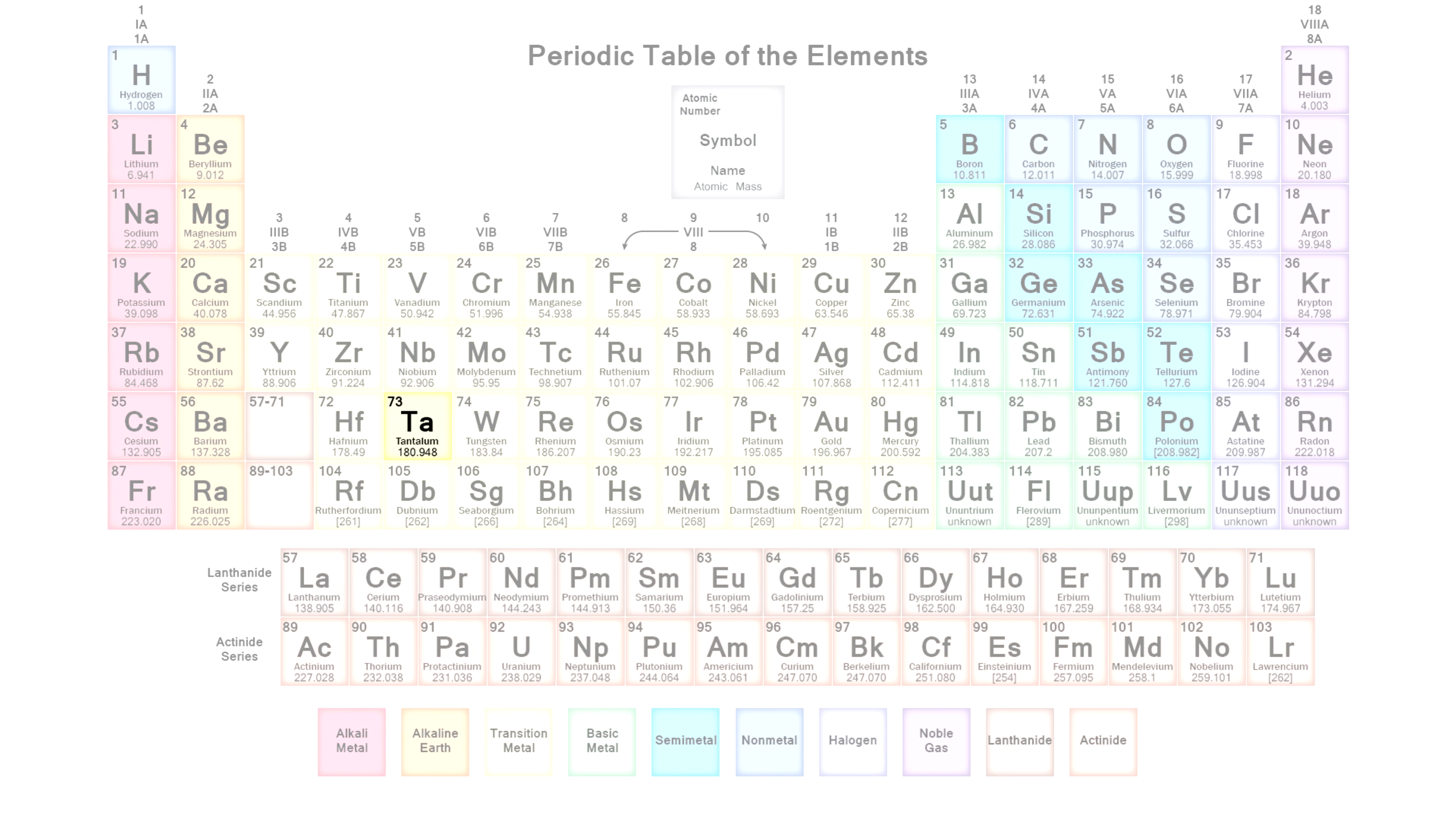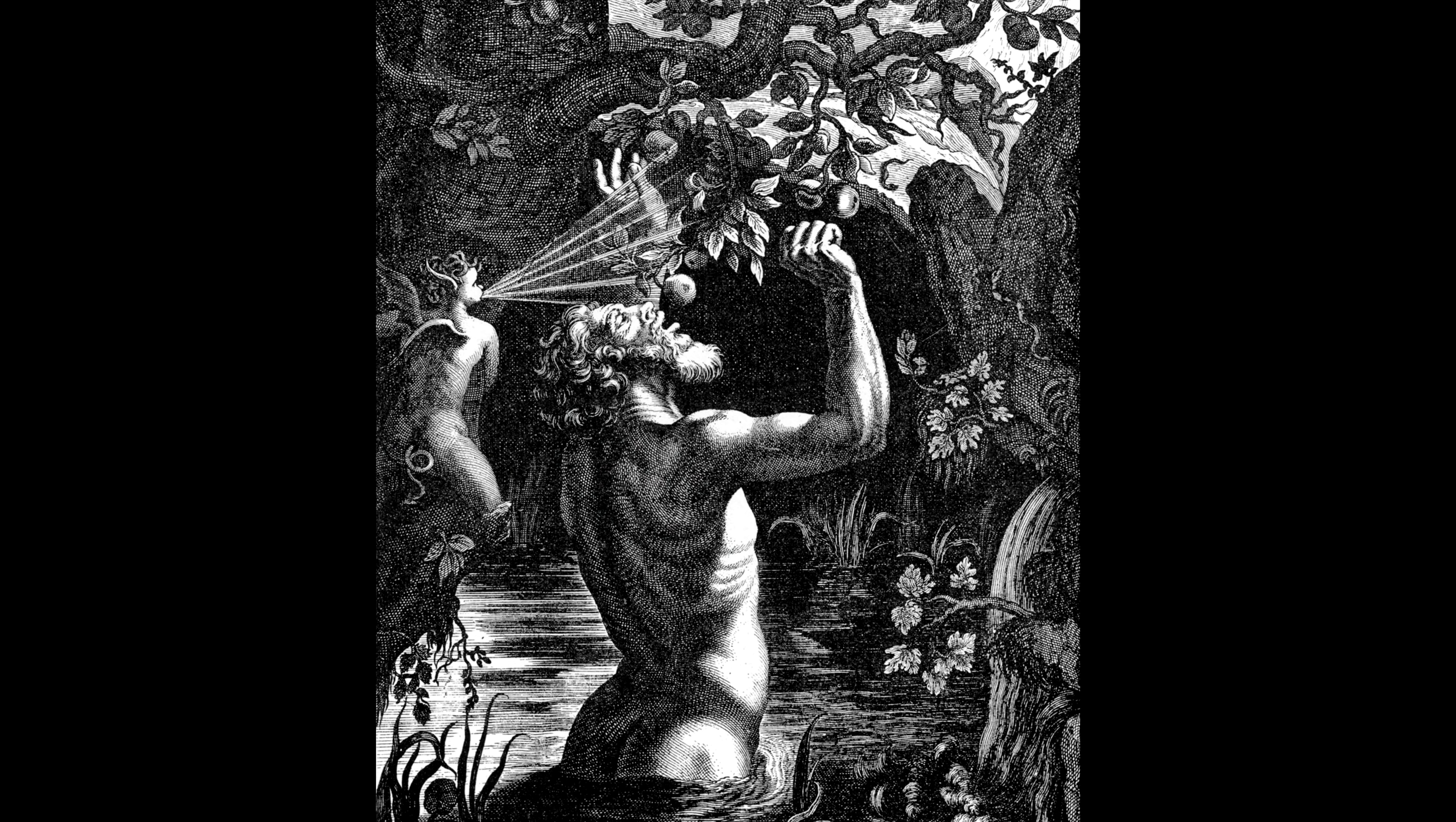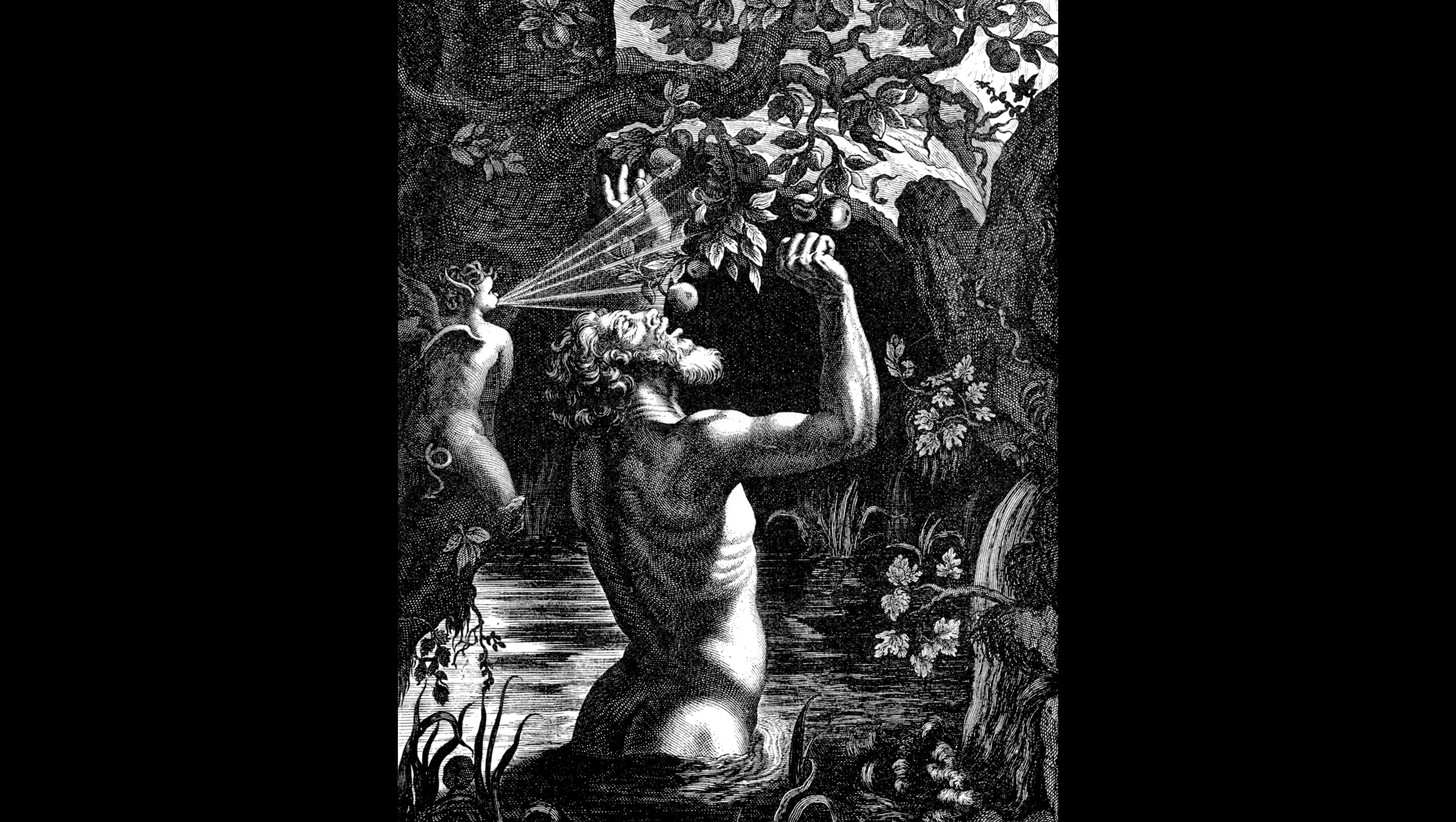In the periodic table of chemical elements, tantalum is located in the fifth group among the transitional refractory metals. Due to its rarity and difficulty in obtaining, tantalum was named after the Greek king Tantalus.